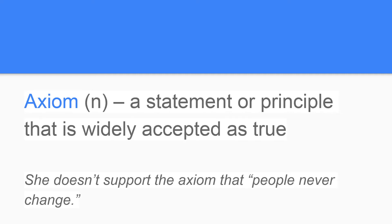Word number 6 is axiom. Axiom is a noun, meaning a statement or principle that is widely accepted as true. For example, she doesn't support the axiom that people will never change. Notice how axiom does not need to be a factually true statement, but merely a statement that is widely accepted by various people as true.